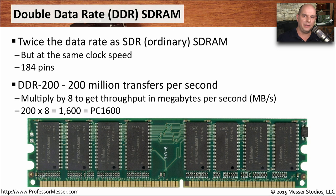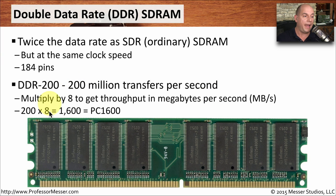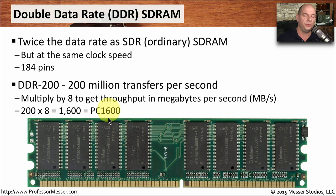In the industry, there's an interesting naming convention for memory. We can describe memory as the total number of transfers it can do in a single second, or as the total throughput available. If we're talking about total transfers per second, you'll see it described as DDR-dash-the number. So DDR200 means this memory can do 200 million transfers in a single second. To describe this memory as total throughput, we multiply that DDR number 200 by 8 to get 1600, and put the term PC in front of it. So DDR200 has exactly the same throughput as PC1600 — we're just describing it in two different ways.